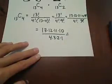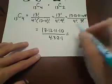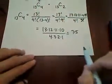So 715 is what I get for the combination of 13 things taken 4 at a time.